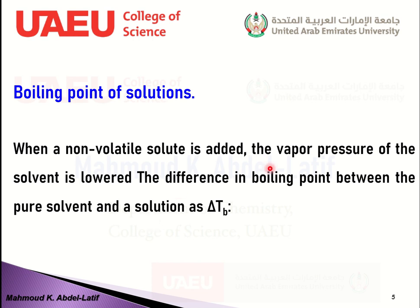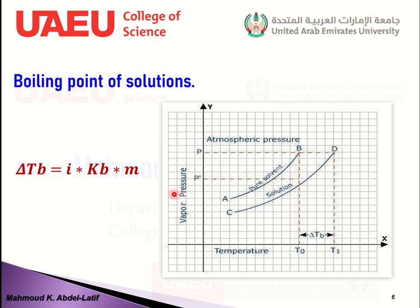As you know, the normal boiling point is defined as the temperature at which the vapor pressure of the solvent equals atmospheric pressure. Since the vapor pressure is lowered, the boiling point of the solution will be higher than the pure solvent. Looking at this diagram — the vapor pressure versus temperature diagram for a pure solvent and a solution.